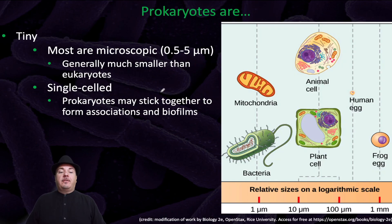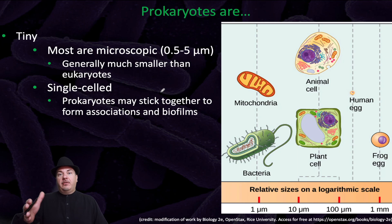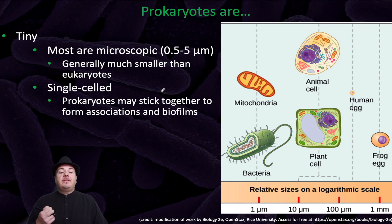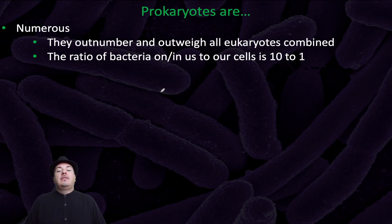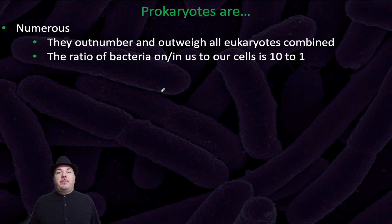What are prokaryotes? First, they're very tiny — most are microscopic, generally much smaller than eukaryotes. Second, they're single-celled or unicellular, whereas most eukaryotes are multicellular. You're made out of trillions of cells, but a bacterium is only one cell big. However, they can stick together to form associations and biofilms. Prokaryotes are numerous — they outnumber and outweigh all of the eukaryotes combined. In fact, you are more bacteria than you are human: the ratio of bacterial cells living in and on us is about tenfold larger than the number of human cells that make you up.